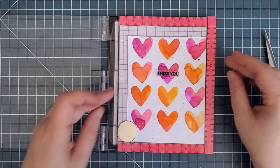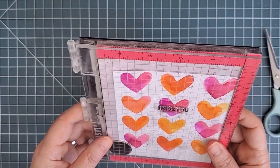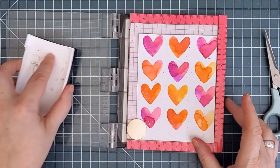Next I trimmed down one of the sentiment stamps from the new Voices in My Head Volume 3 set from "I miss your face" to "I miss you." I used my mini MISTI this time and I stamped it with Versafine Onyx ink.